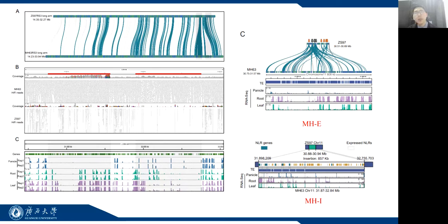In the MHI region, 11 NLR genes were also expressed at higher levels in roots than in other tissues.